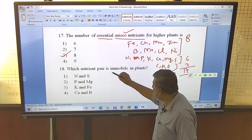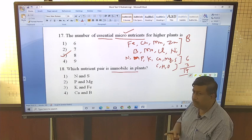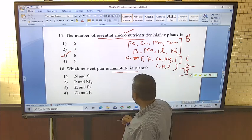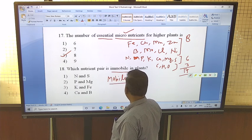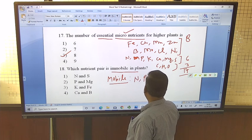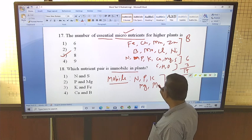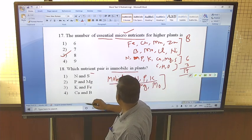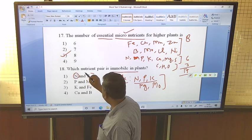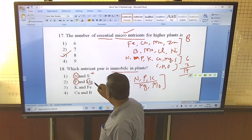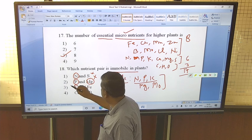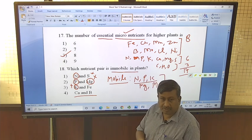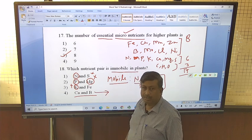Which nutrient pair is immobile in plant? Here immobility - remember the mobile nutrients which show deficiency symptoms on older leaves, lower leaves. Mobile nutrients are - since their number is less, remember the mobile nutrients: N, P, K, Magnesium and Molybdenum. These are mobile in plant. Here asks about immobile. Nitrogen is mobile, so option is incorrect. Here Phosphorus and Magnesium, both are mobile, so it is incorrect. And here Potassium is mobile, so it is also incorrect. Then Calcium and Boron - these are highly immobile, and their translocation is very limited. That's why their deficiency symptoms come on terminal buds.